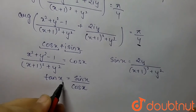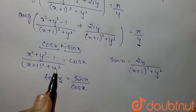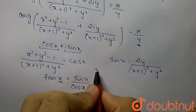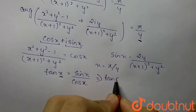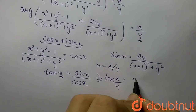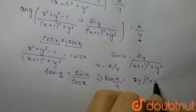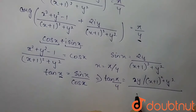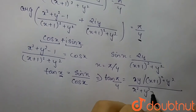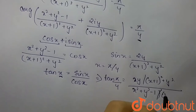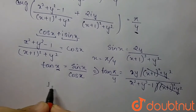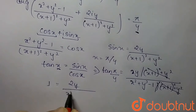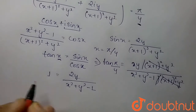Since the argument equals π/4, θ = π/4. Therefore tan(π/4) = 2y/((x+1)² + y²) divided by (x² + y² - 1)/((x+1)² + y²). The denominators cancel out, giving 1 = 2y/(x² + y² - 1).